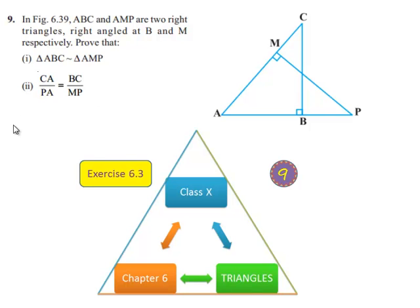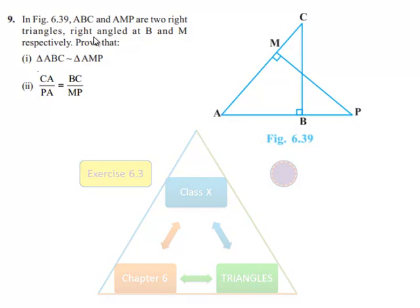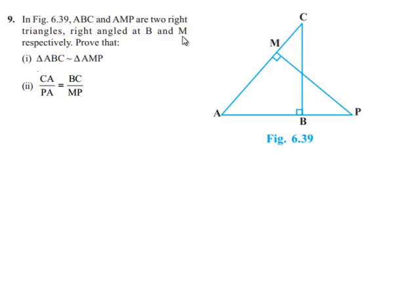Moving on to the 9th question. In figure 6.39, ABC and AMP are two right-angled triangles, right-angled at B and M respectively.